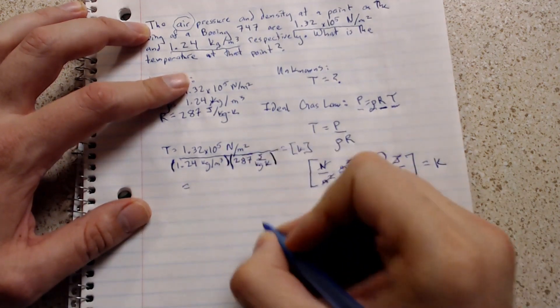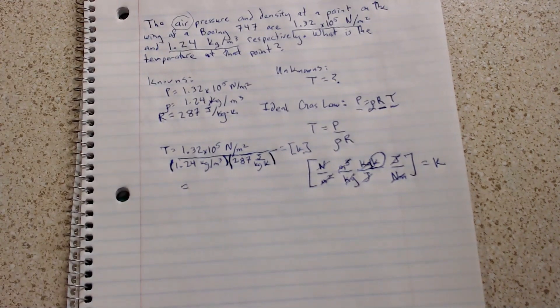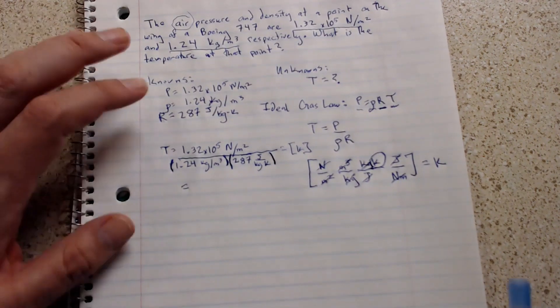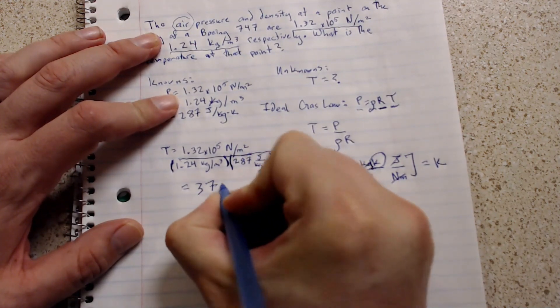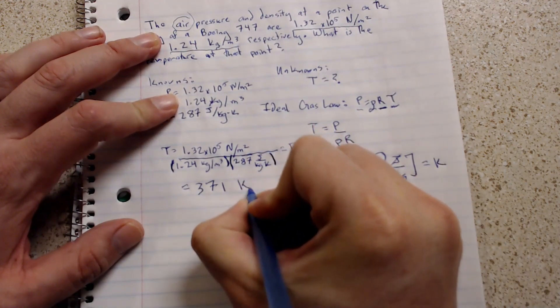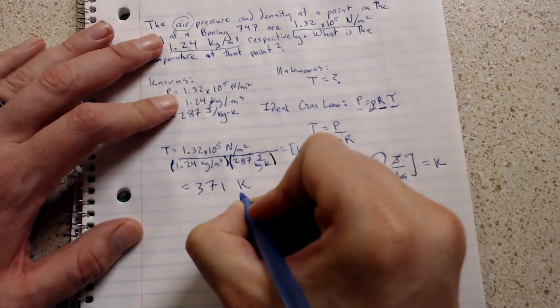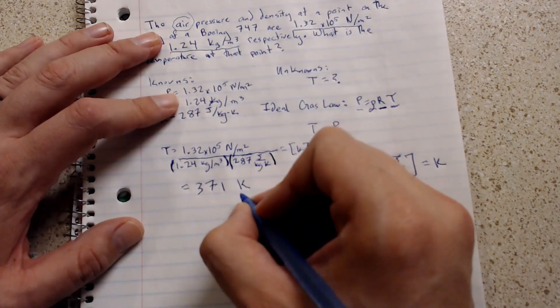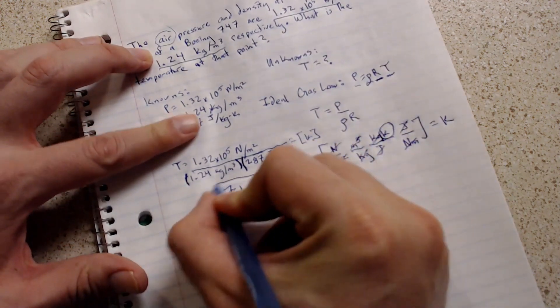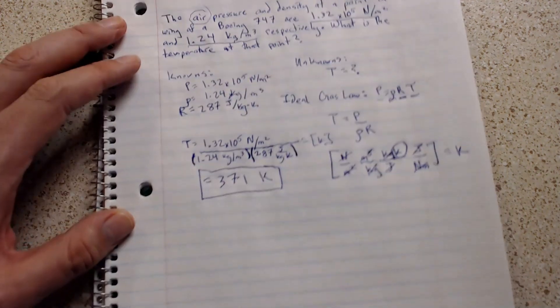When you plug this into your calculator you're going to get an answer of 371 Kelvin. So that's going to be your answer. Make sure you box it. And there you go.